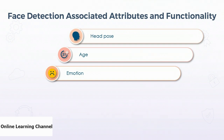All possible emotions are scored and totaled up to a value of one — think of a pie chart. You can be surprised, fearful, and happy all at the same time if you're on a roller coaster. The API is able to detect emotions like happiness, sadness, anger, contempt, disgust, surprise, fear, and even neutrality.